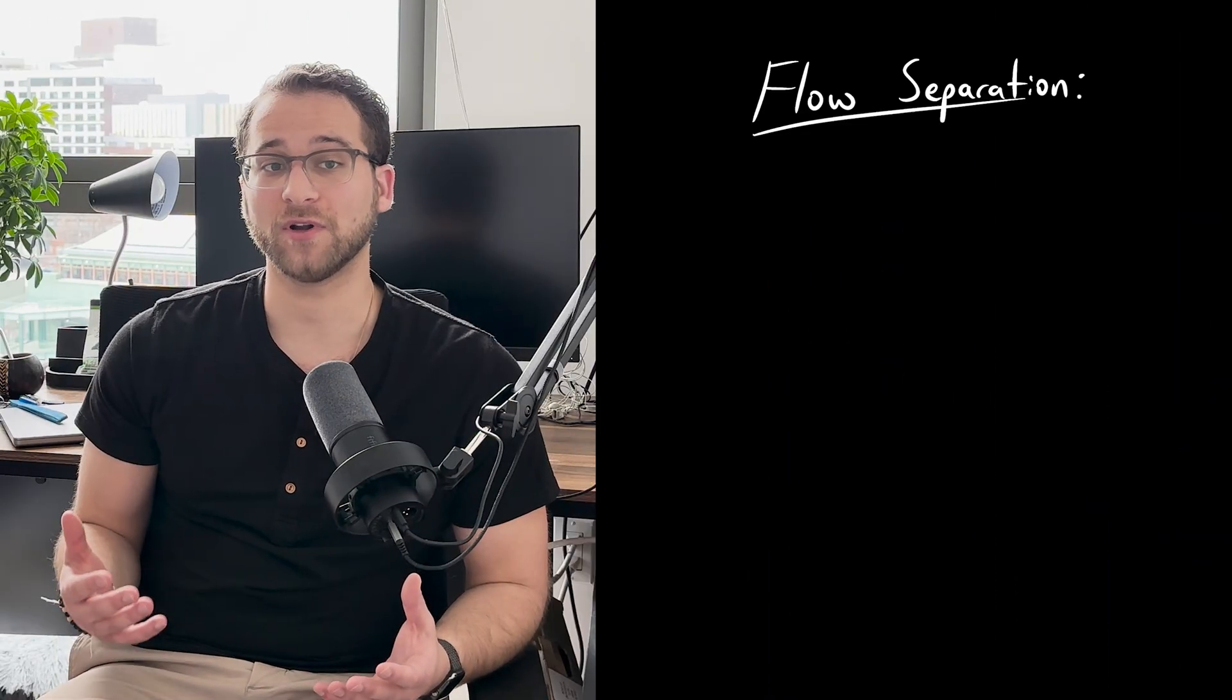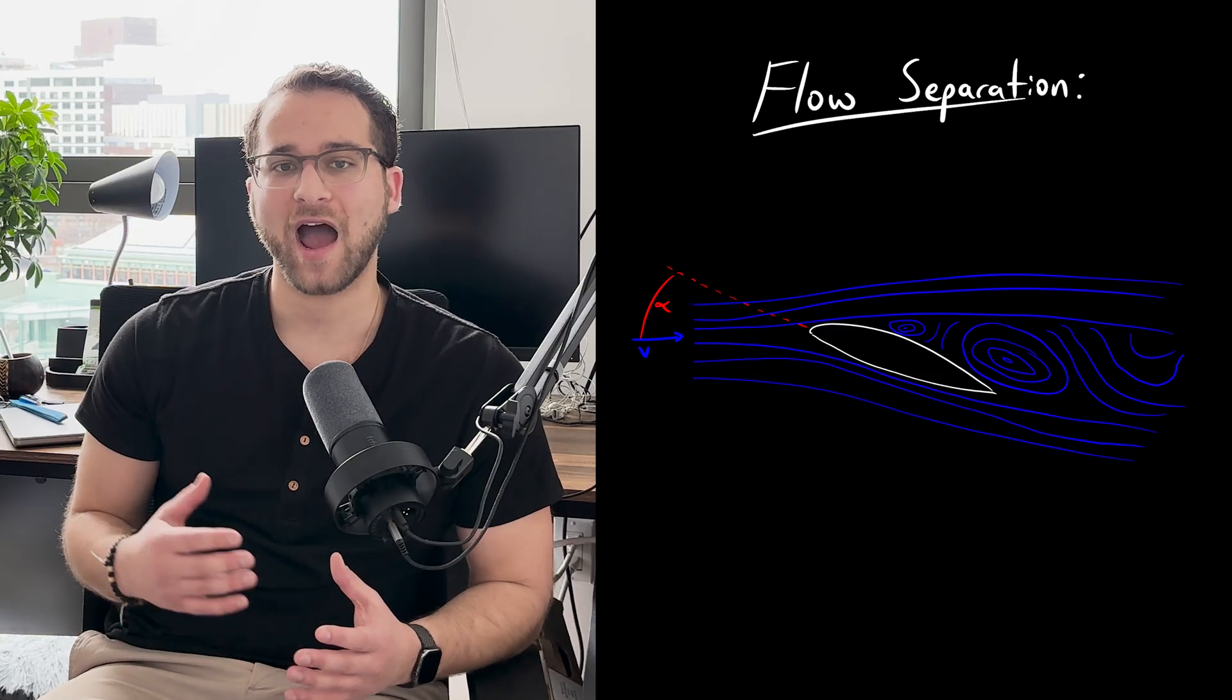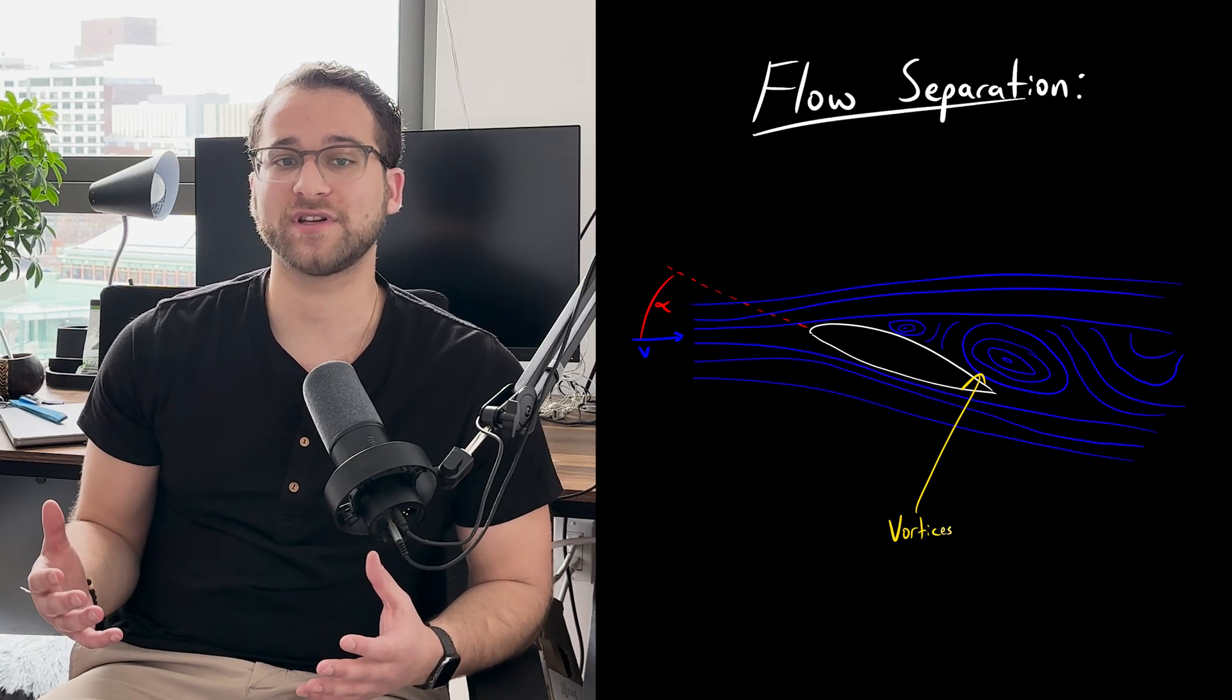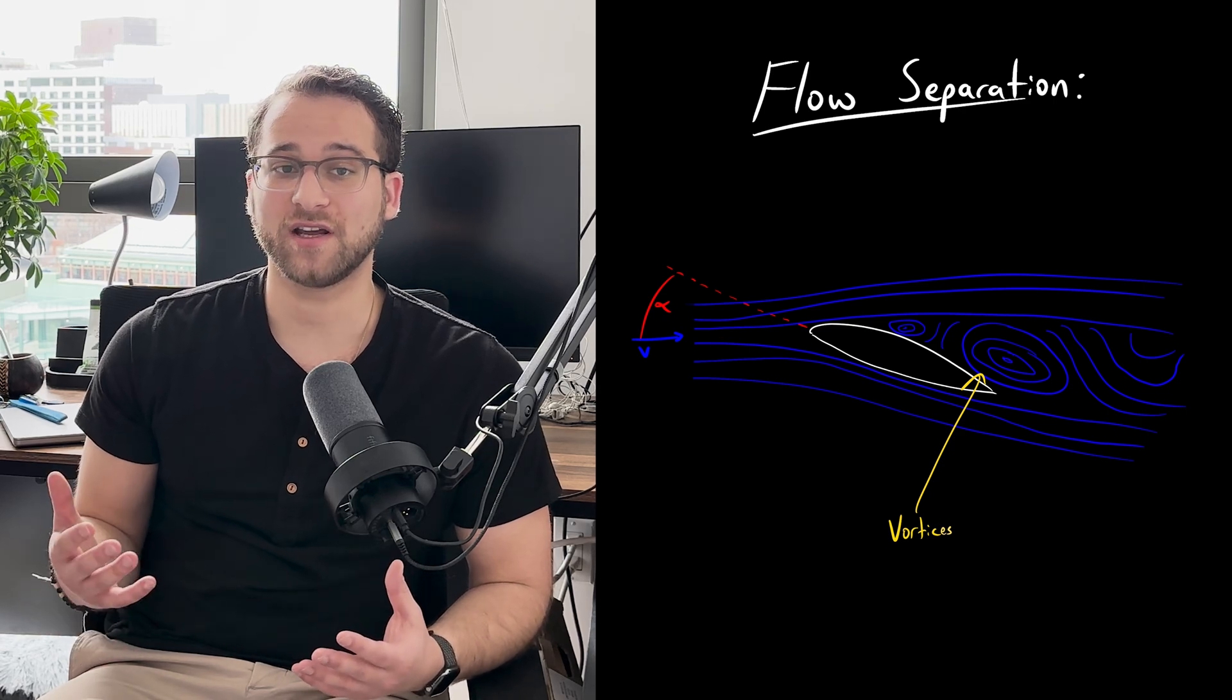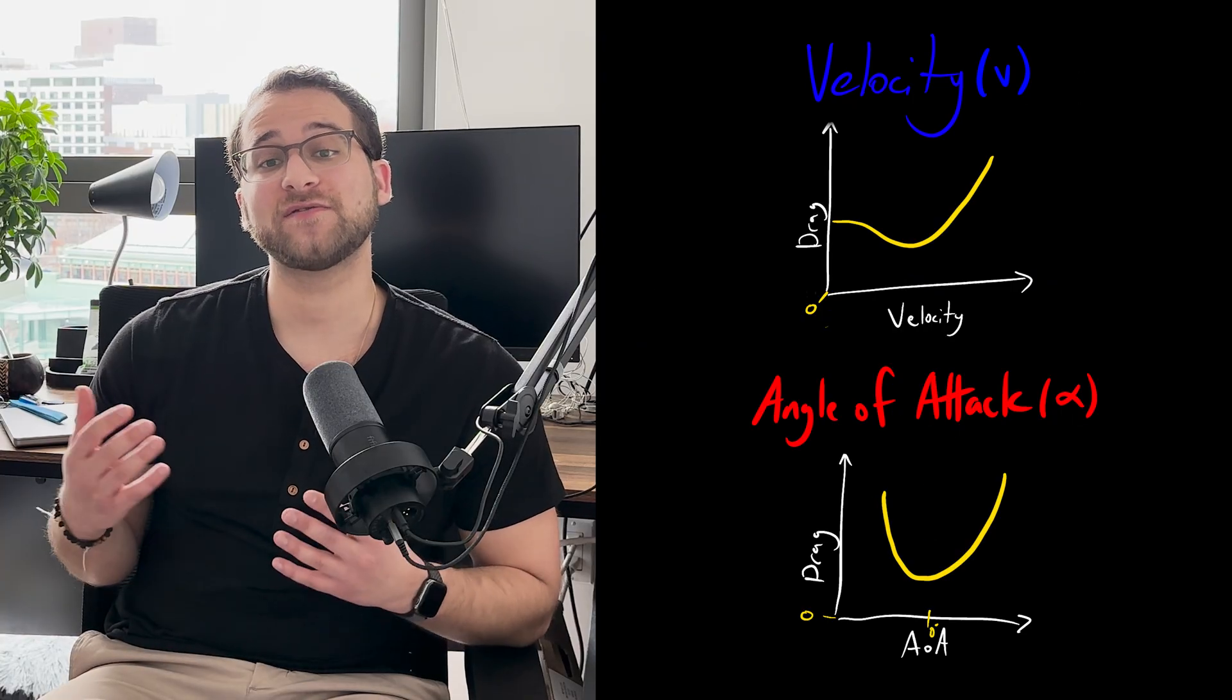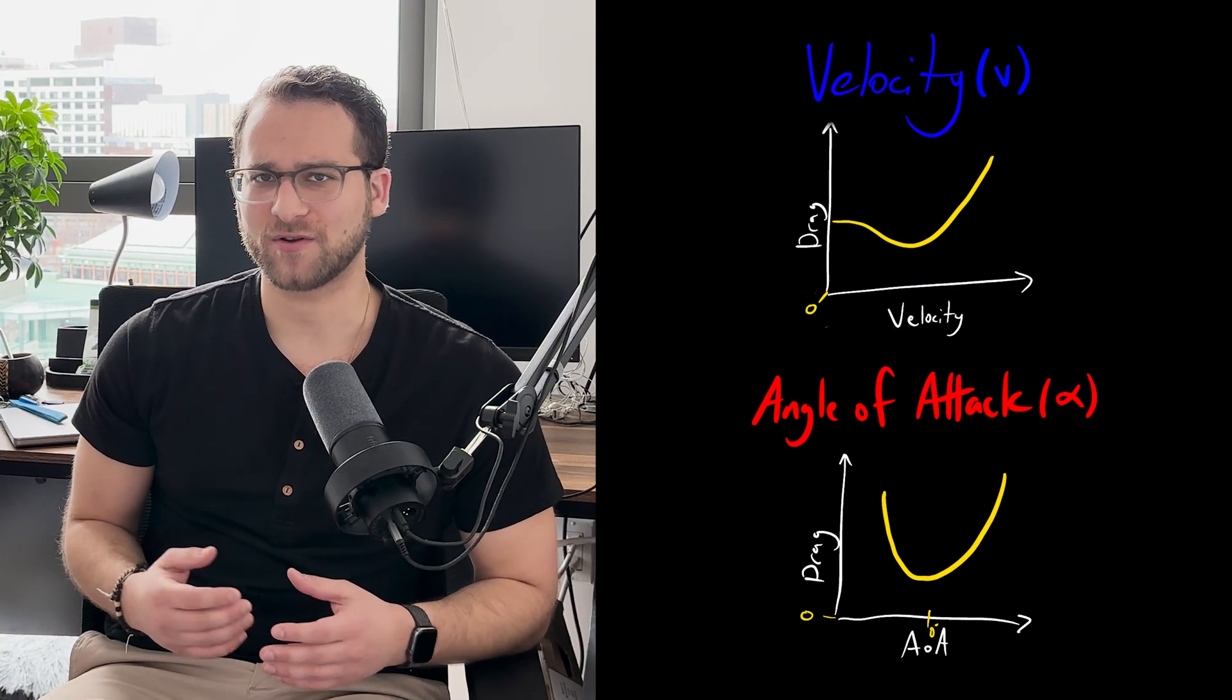This happens due to something called flow separation, as can be seen in this airflow diagram. At high angles of attack, the flow will begin to turn turbulent, creating vortices that reduce lift. But it's important to note that drag continues to increase. Yep, that's right. We can't forget about drag. Similarly, these variables also affect the drag of the airfoil. Pause here if you want to take a closer look.